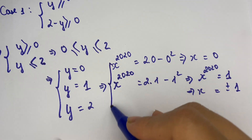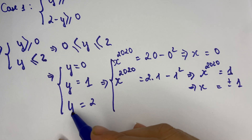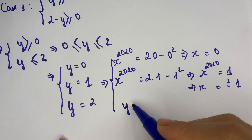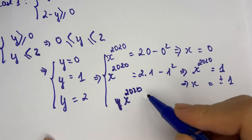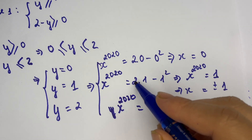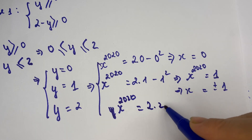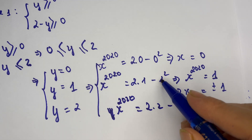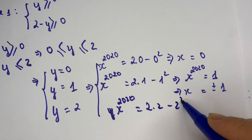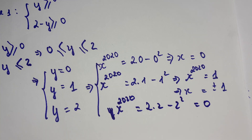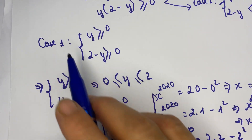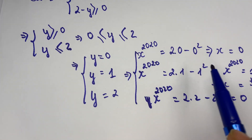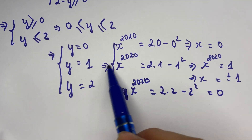For y equals two, x to the power 2020 equals 2 times 2 minus 2 squared equals zero. So for case number one, we have four pairs of x and y.